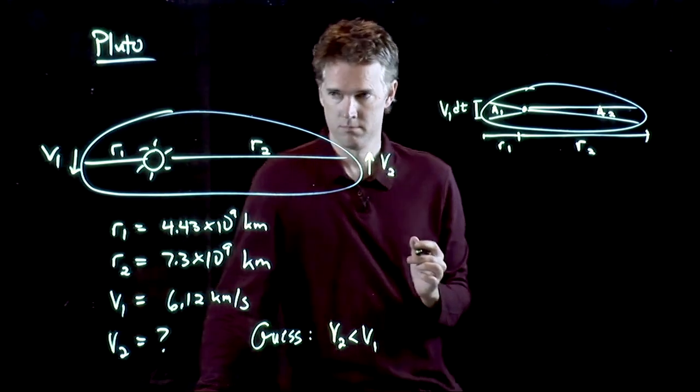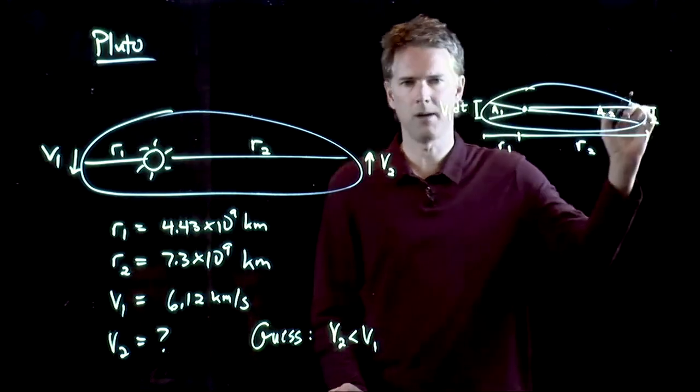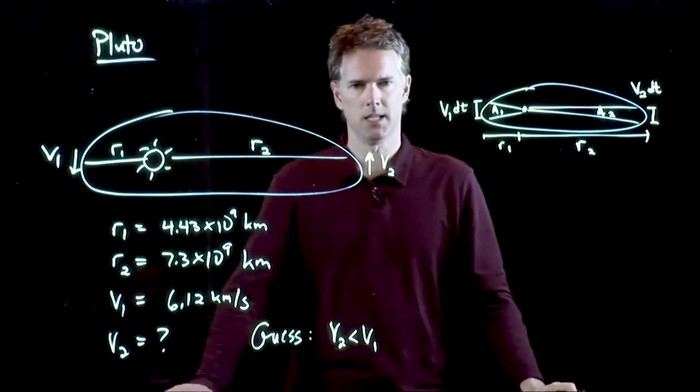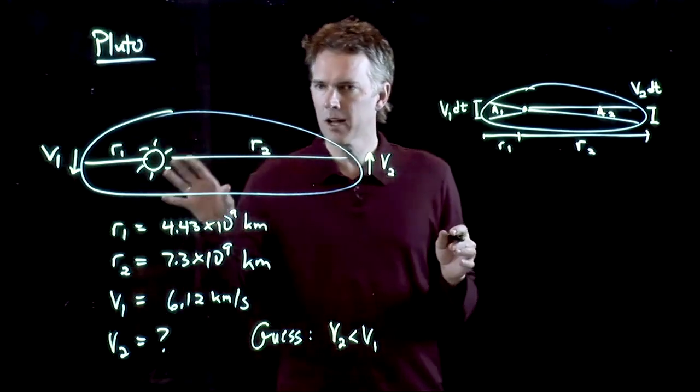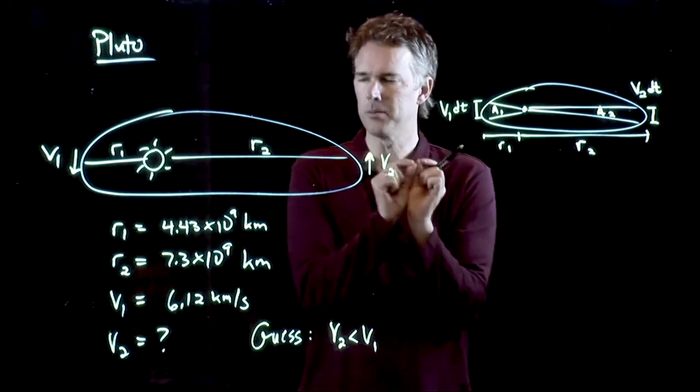Yeah? That's the distance. What about over here? I could do the same thing on this side. This would be V2 DT. And what Jamie said was, if Kepler's second law is going to hold, those DTs, those little deltas, have to be exactly the same.